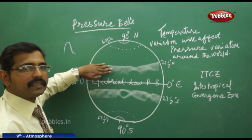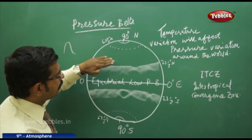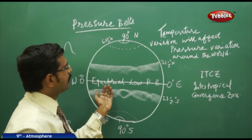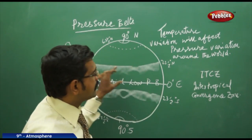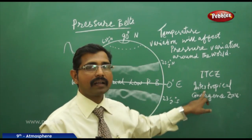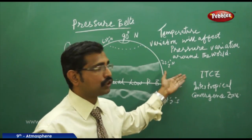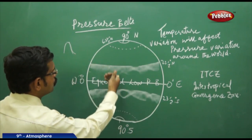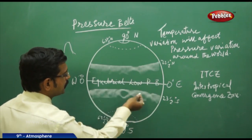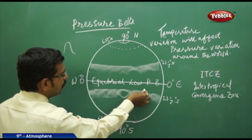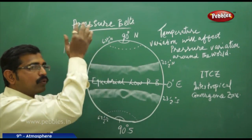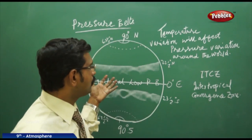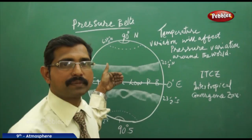In these tropical zones, the air above converges from one zone to another. That is why this zone is also called the Intertropical Convergence Zone, or ITCZ. The tropical zones from the northern hemisphere and the tropical zone of the southern hemisphere have converging air. This zone has low pressure because the heat is more.